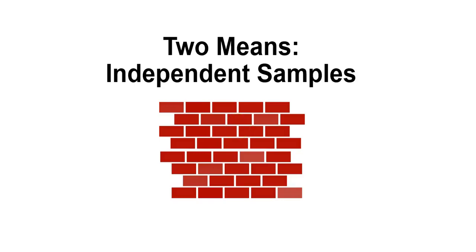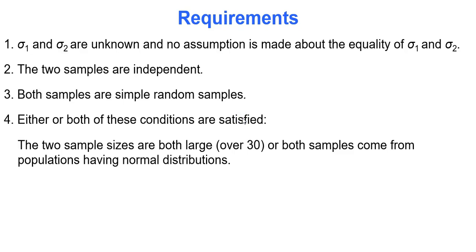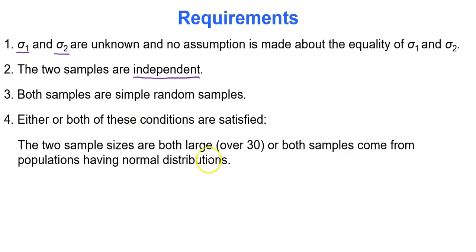Hi there. In this video, we're actually going to look at comparing the means of two independent samples. The requirements to use this method: the standard deviations for both populations, sigma 1 and sigma 2, are unknown, and no assumption is made about the equality of those standard deviations. The two samples are independent, both are simple random samples, and either or both conditions are satisfied: the two sample sizes are both large (over 30), or both samples come from populations having normal distributions — meaning bell-shaped.